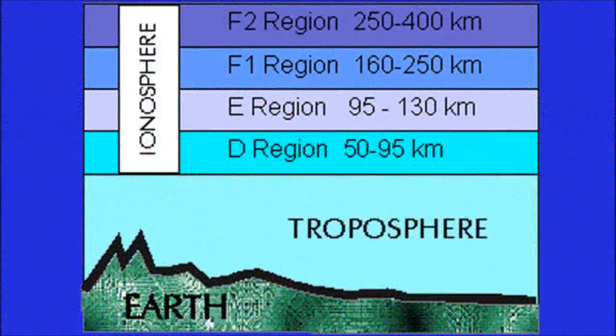There are three basic layers in the ionosphere. The D-layer is responsible for absorbing radio frequencies, not refracting. The more the D-layer is ionized, the more it absorbs radio energy. Frequencies above 10 MHz are not readily absorbed by the D-layer, but lower bands are usually unusable for long-distance communications during the daytime, thanks to the D-layer.